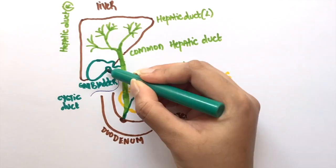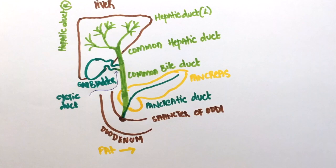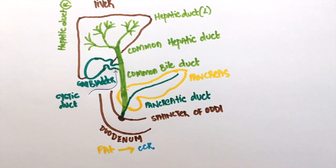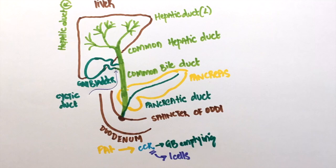The answer to this question is duodenum. Whenever there is fatty food in the duodenum, it releases cholecystokinin. CCK stimulates the emptying of the gallbladder. CCK is produced by the I cells of the duodenum.